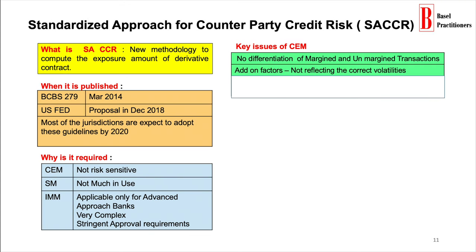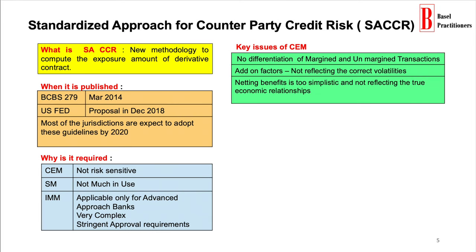The add-on factors used in potential future exposure are defined prior to the global financial crisis. These are not reflecting actual volatility, so they need to be calibrated and used in PFE computation. Lastly, the netting benefits are defined too simplistically in computing the PFE under CEM methodology by using the NGR net-to-gross ratio, whereas the revised methodology has proposed offsetting based on sound economic relationships. For example, in case of interest rate derivatives, full offsetting is permitted within the maturity bucket, and only partial offsetting is permitted across time buckets within the same currency.